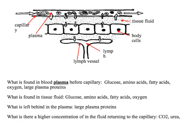We're going to talk about tissue fluid. This is the arterial end of the capillary bed, and this is the venule end. At the arterial end, you'll find much higher hydrostatic pressure because it's closer to where the heart has contracted, which generates the pressure. Inside the capillary we have plasma, and we then have the tissue fluid which bathes body cells.